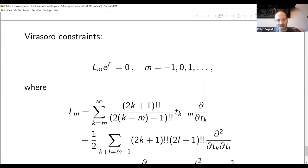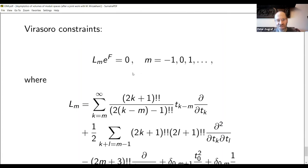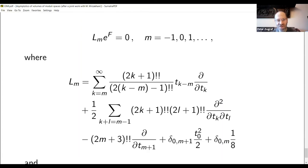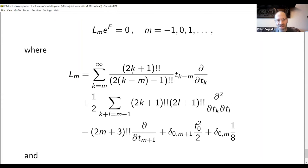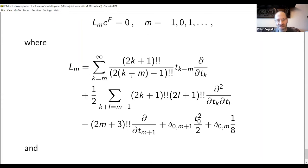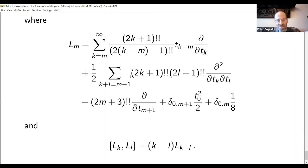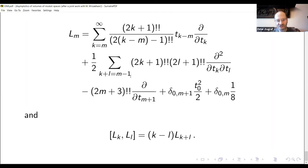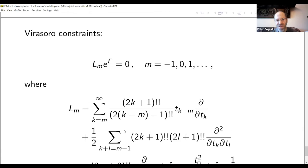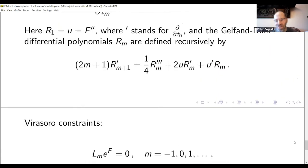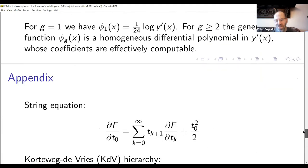So, that's the string equation. And Korteweg-de Vries hierarchy looks like this. Where R's are differential polynomials called Gelfand-Dikii polynomials. And they're defined recursively. So, that's an infinite system of rather complicated partial differential equations. It is equivalent to the set of Virasoro constraints. These are equations of this form. Where m ranges from -1, 0, 1 and so on to infinity. And the operator with index m is given by this formula. These operators L_m, they obey the Virasoro commutation relation. That is written here. And that's why they're called Virasoro constraints. The two sets of equations are equivalent. Both of them determine the Witten-Kontsevich potential uniquely.